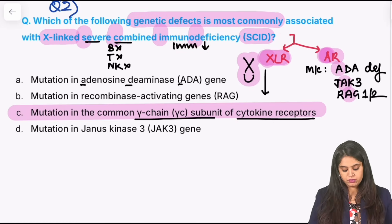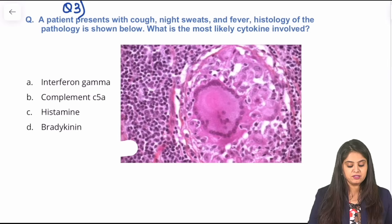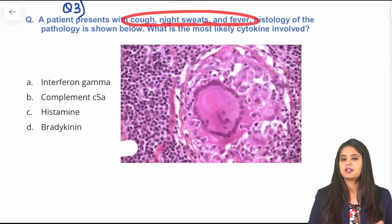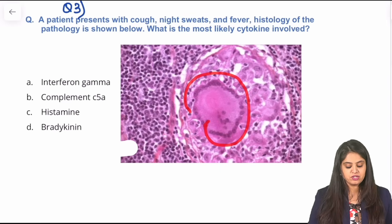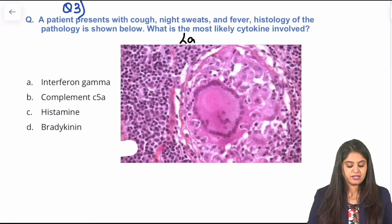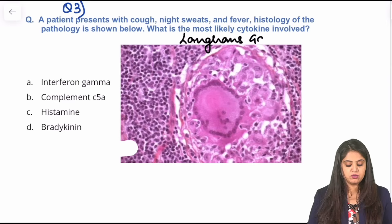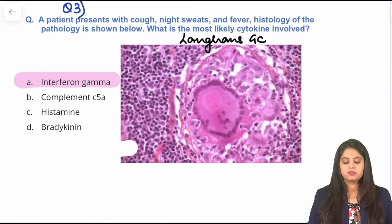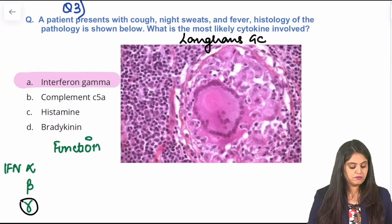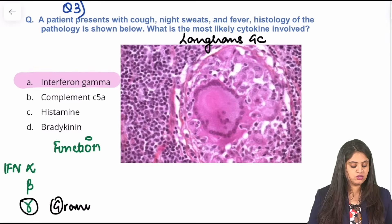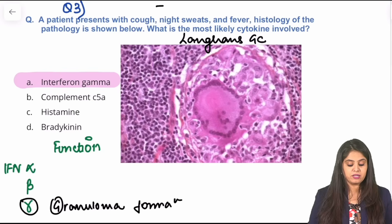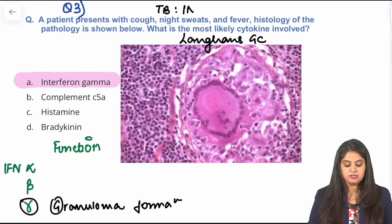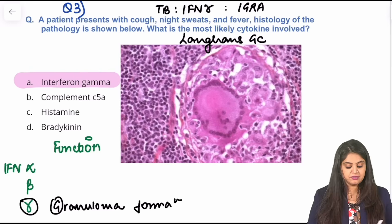Moving on to question three — based on cough, night sweats, and fever, in our country we think of TB. The classical giant cell shown in the first YouTube session was the Langhans giant cell. They've asked which cytokine is involved — the answer is interferon gamma. We know interferons are of three types: alpha, beta, gamma. G for gamma, G for granuloma formation. What's happening with a giant cell is granuloma formation, and interferon gamma is responsible. That's also why in TB microbiology we do a test called IGRA — interferon gamma release assay.